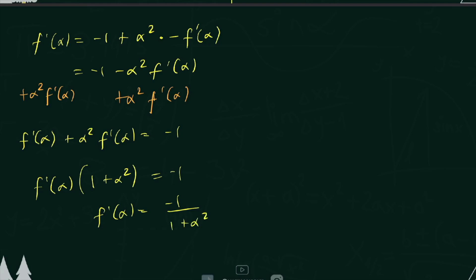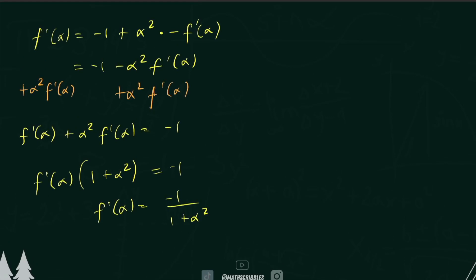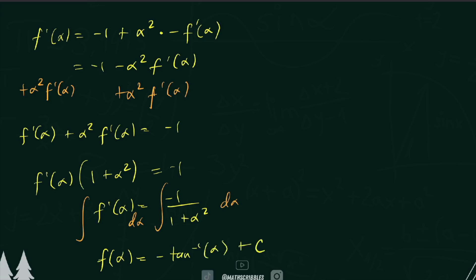Since F'(α) = −1/(1 + α²), we can integrate in terms of alpha. On the left side we get F(α), and on the right side integrating −1/(1 + α²) gives negative arctan(α) plus a constant C. We can't forget the plus C because this is an indefinite integral. Now we need to determine the value of C by going back to explore our original function.